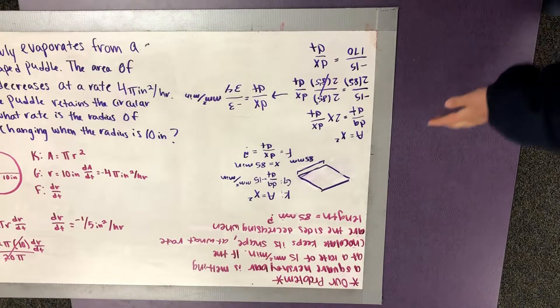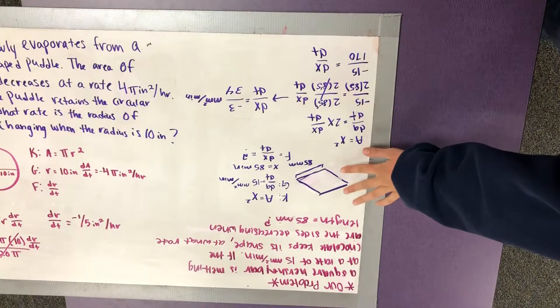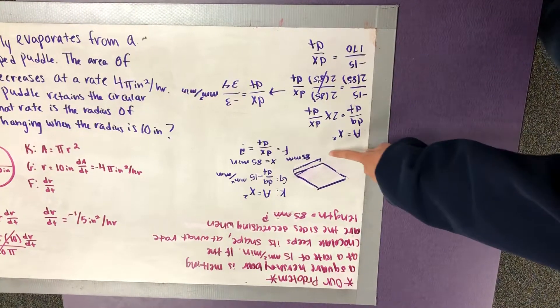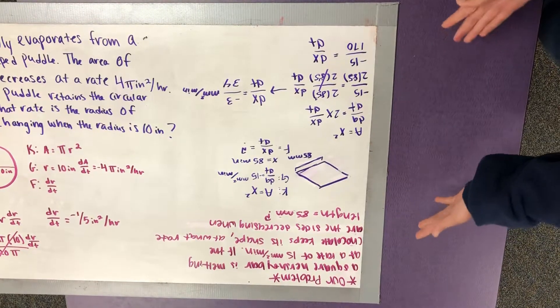Okay, so here is our Hershey's chocolate, and the length is 85 millimeters, and as you can see, it is melting.